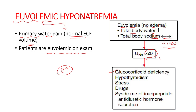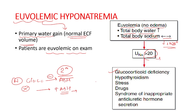Secondary adrenal insufficiency occurs due to pituitary disease. Normally, glucocorticoids exert negative feedback on ADH release. In glucocorticoid deficiency, this feedback is lost, leading to increased ADH concentration, water retention, and hyponatremia. When hydrocortisone is given to these patients, the hyponatremia is corrected. Other conditions causing euvolemic hyponatremia include hypothyroidism, which corrects on achieving the euthyroid state, stress, drugs, and SIADH.